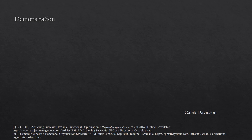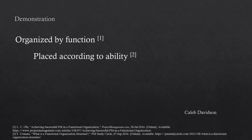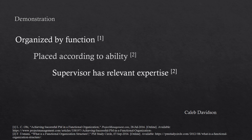My name is Caleb Davidson, and I will be taking you through a short demonstration of what functional organization would look like. In functional organization, the organization is organized by functions. Members are placed according to their ability. The supervisor has direct, relevant experience to that function, and there is a clear, single, direct manager over every individual.